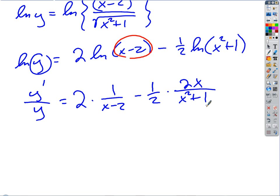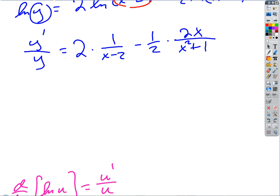2x over x squared plus 1. Good. The derivative of x squared plus 1 is just 2x over x squared plus 1. And I can clean that up a little bit. I could multiply this straight across so I get 2 over x minus 2 minus, cancel those guys, x over x squared plus 1. Now that's y prime over y. So if I want to solve for y prime, it's the last step to isolate y prime.